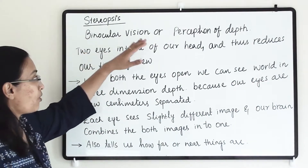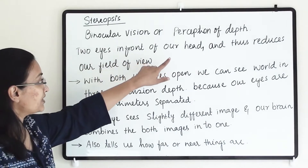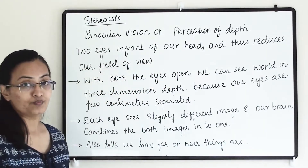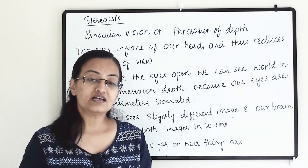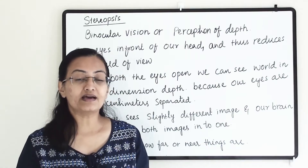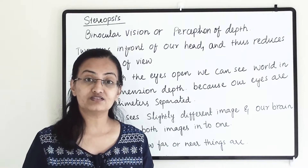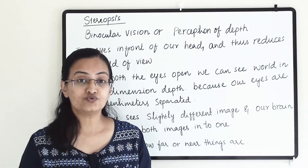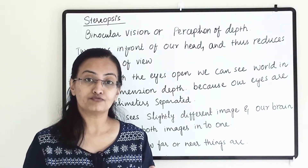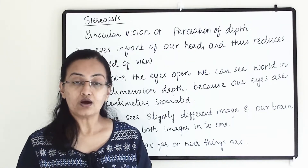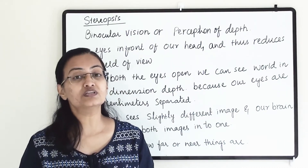Stereopsis is a binocular vision or perception of depth. Both eyes are in front of our head, which reduces our field of view. Our eyes are different compared to chameleons or flies — those animals have eyes on the sides or top of their head, giving them the widest possible field of view because they need to protect themselves from predators.